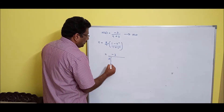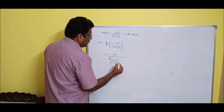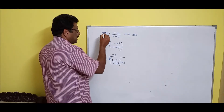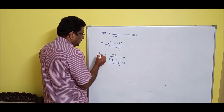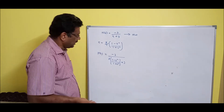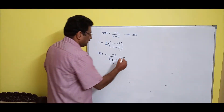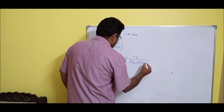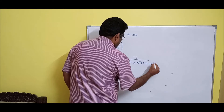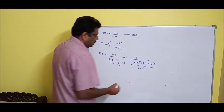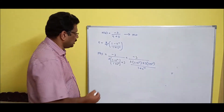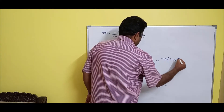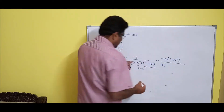Replacing s, we get H(z) = -3 divided by [2 × (1 - z⁻¹)/(1 + z⁻¹) + 3], with T = 1. Simplifying: the denominator becomes 2(1 - z⁻¹) + 3(1 + z⁻¹), all divided by (1 + z⁻¹). Bringing (1 + z⁻¹) to the numerator gives -3(1 + z⁻¹) in the numerator.